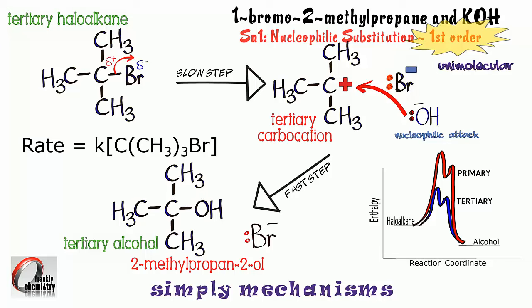And, as a result, the activation energy for that first slow step is simply too high to overcome. So, in the case of primary haloalkanes, they prefer to undergo the SN2 mechanism, where both the haloalkane and the hydroxide ions are involved in the slow rate determining step.